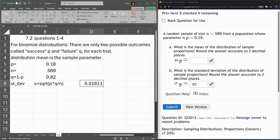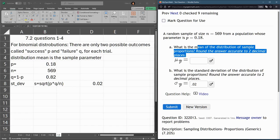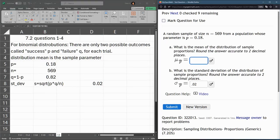Of course, we can let Excel round. There we go. This first one right here, the mean - the distribution mean is the sample parameter. So it's still the 0.18 right there.